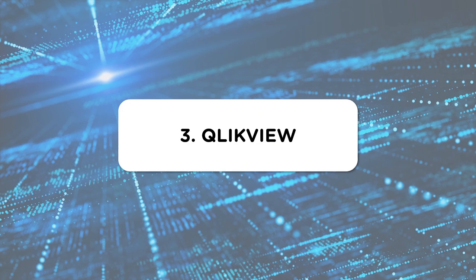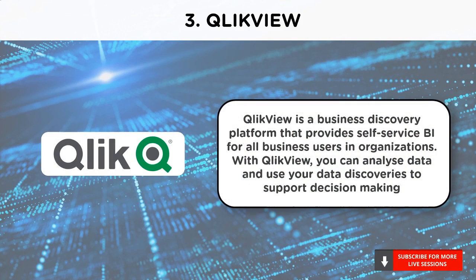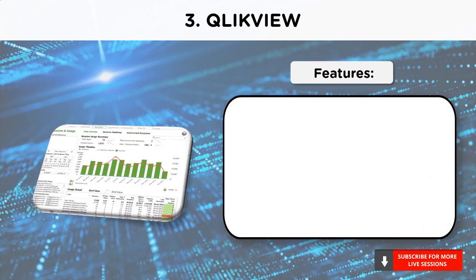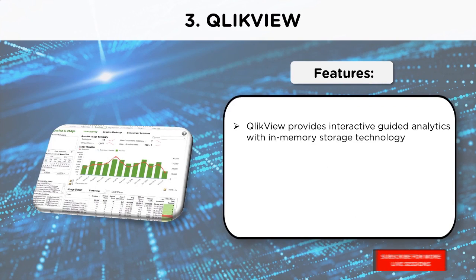At number 3, we have QlikView. QlikView software is a product of Qlik for business intelligence and data visualization. QlikView is a business discovery platform that provides self-service BI for all business users and organizations. With QlikView, you can analyze data and use your data discoveries to support decision-making. QlikView is a leading business intelligence and analytics platform in the Gartner Magic Quadrant. QlikView provides interactive guided analytics with in-memory storage technology. During the process of data discovery and interpretation of collected data, the QlikView software helps the user by suggesting possible interpretations.